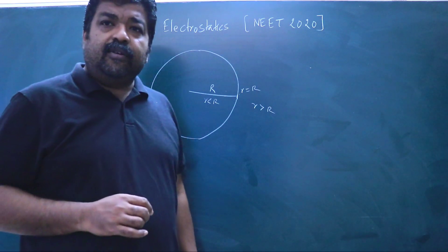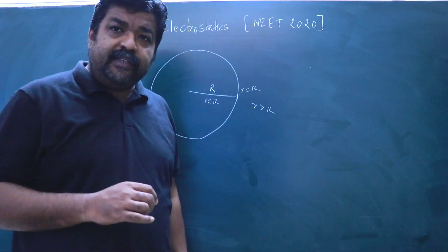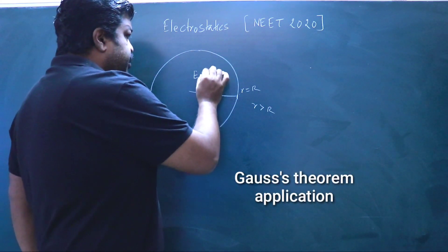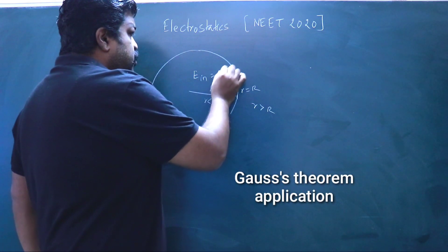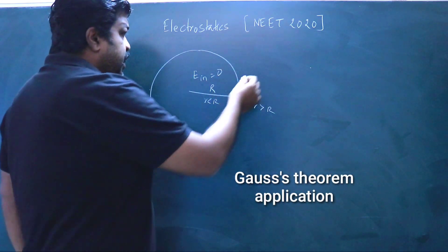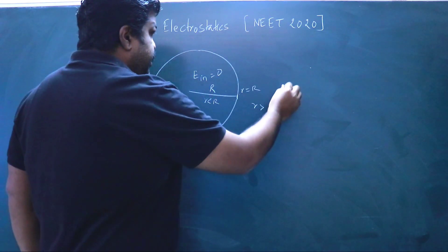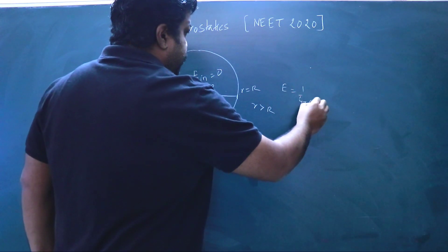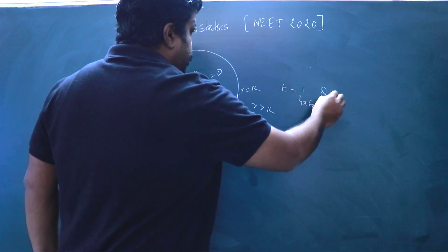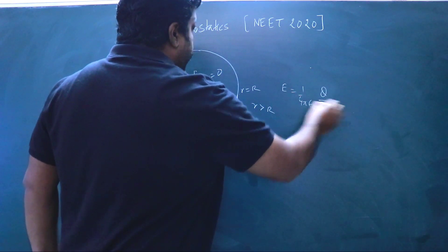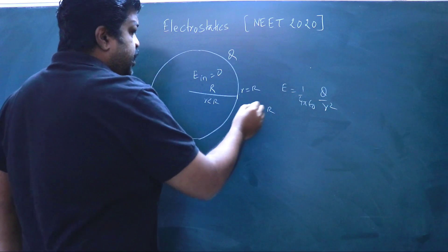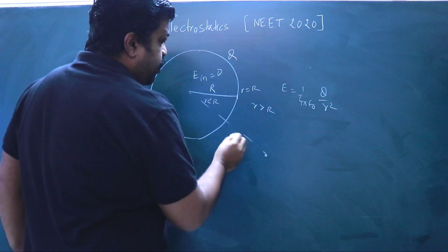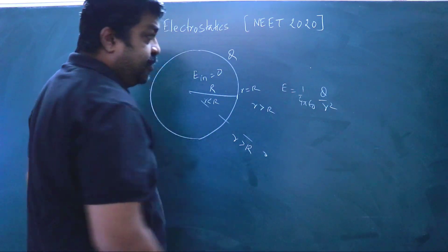For a charged hollow sphere, inside the hollow sphere the electric field is zero — E inside is zero. Outside, E is equal to 1 over 4π epsilon-naught times Q over r squared, where Q is the charge. So if you are finding the electric field at a point where r is greater than R, this formula applies.